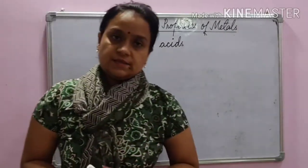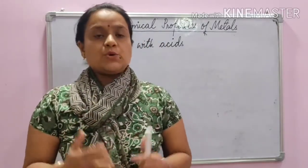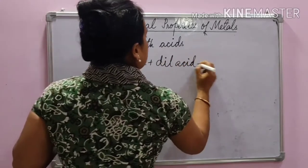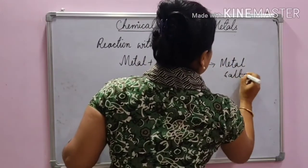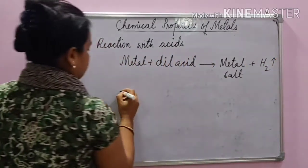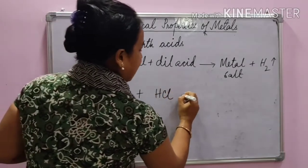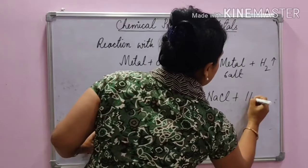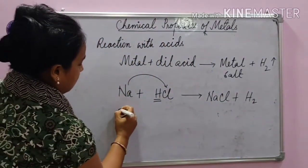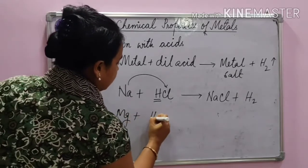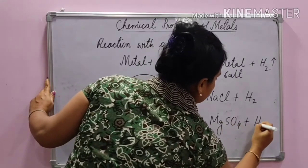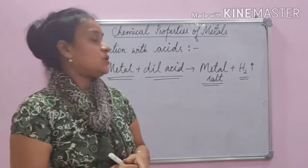Reaction of metals with acids. Metals react with acid to produce the salt of that metal and hydrogen gas. Simply remember: metal plus dilute acid gives metal salt plus hydrogen gas. For example, sodium reacts with dilute hydrochloric acid to give NaCl (sodium chloride) and hydrogen gas. Or magnesium reacting with dilute sulfuric acid gives magnesium sulfate and hydrogen gas.